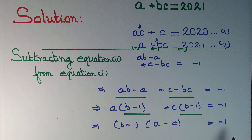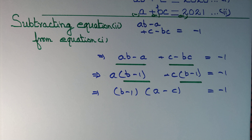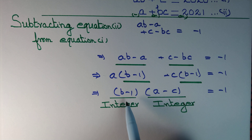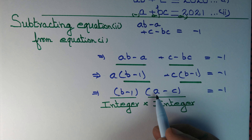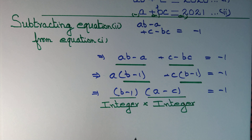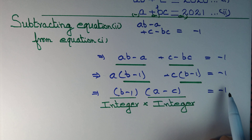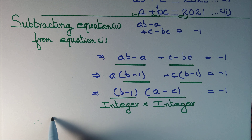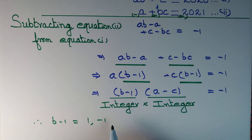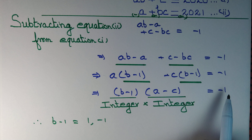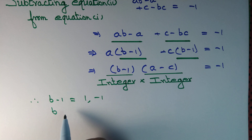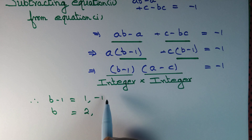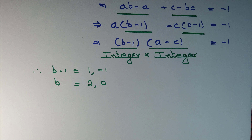Since we have a finite number of factors, what are the integer factors of -1? They are 1 and -1. Since b is an integer, b - 1 is an integer, and since a and c are integers, a - c is also an integer. So we have integer × integer = -1, meaning b - 1 must be a factor of -1. Therefore b - 1 = 1 or b - 1 = -1, giving b = 2 or b = 0.